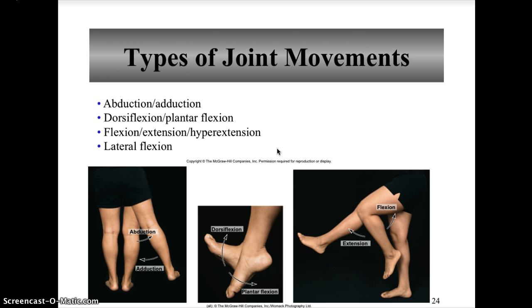Flexion is bending parts of a joint so the angle between them decreases and the parts come closer together — such as bending the knee. Extension is moving parts of a joint so the angle between them increases and parts move farther apart — such as straightening the knee. Hyperextension is extension of parts at a joint beyond the anatomical position, like bending the head back beyond upright, and often describes abnormal extension beyond normal range of motion, which can lead to injury.